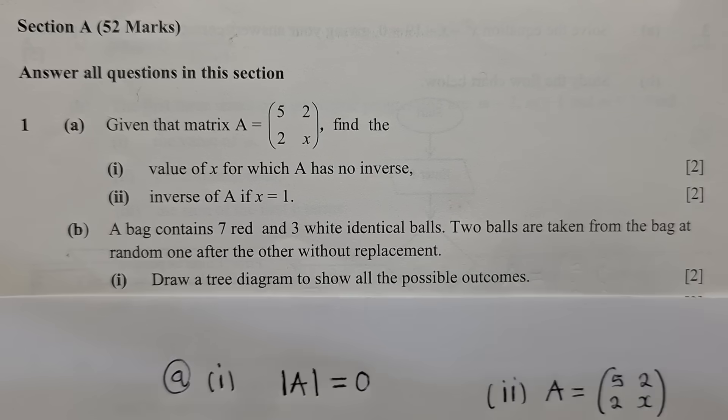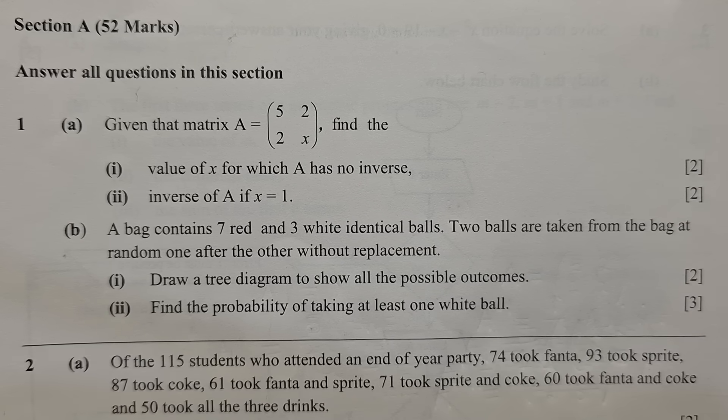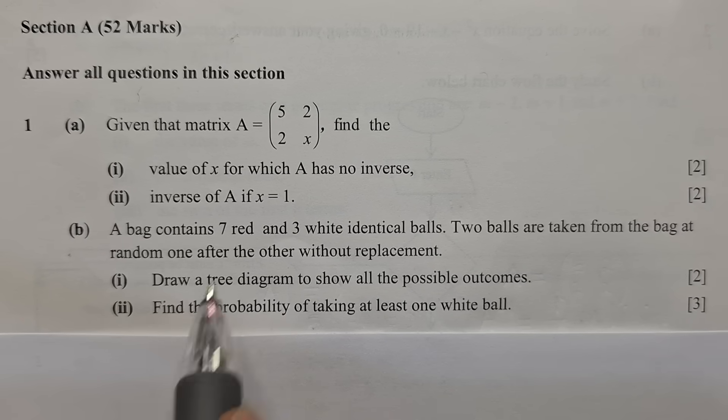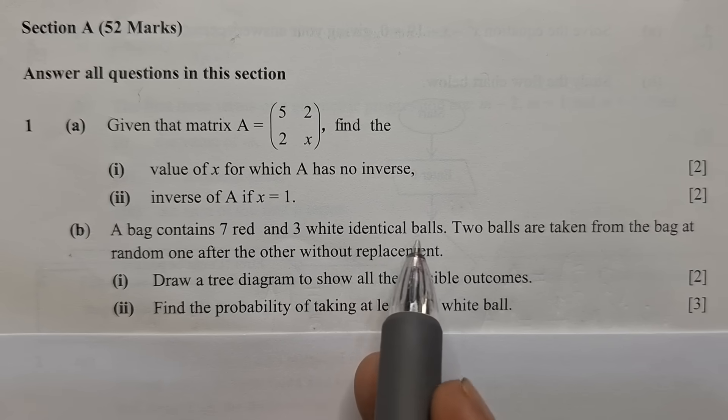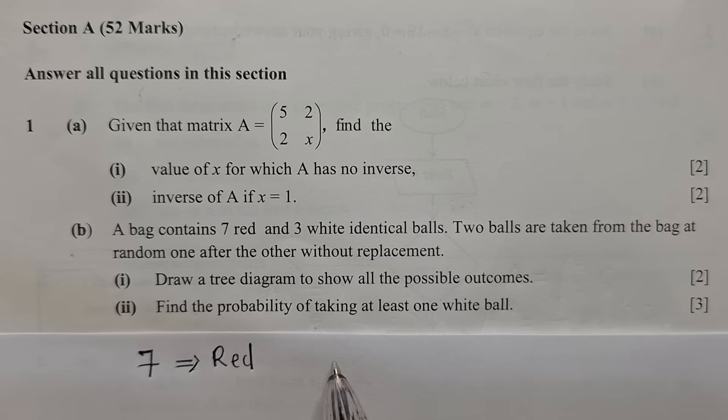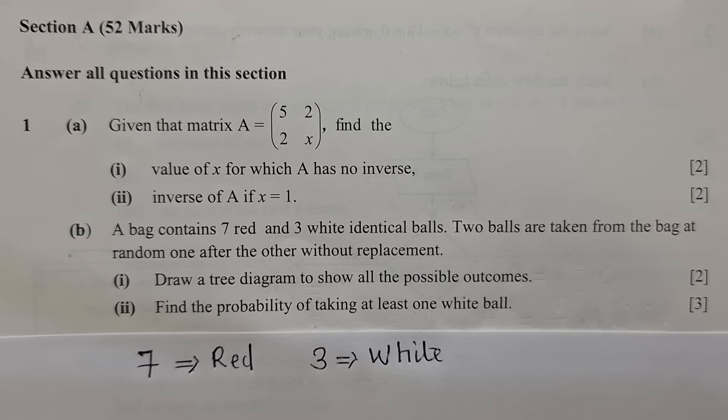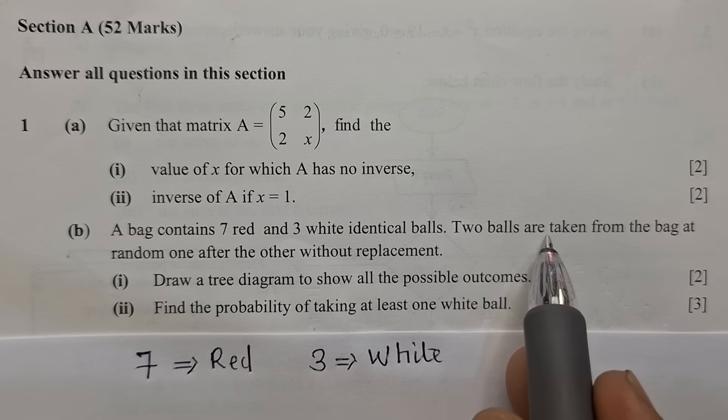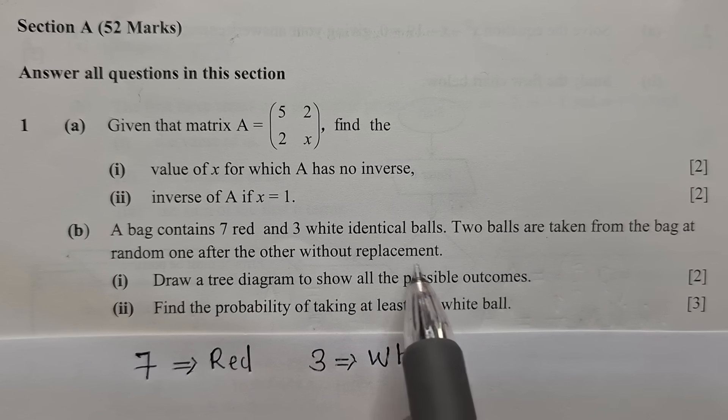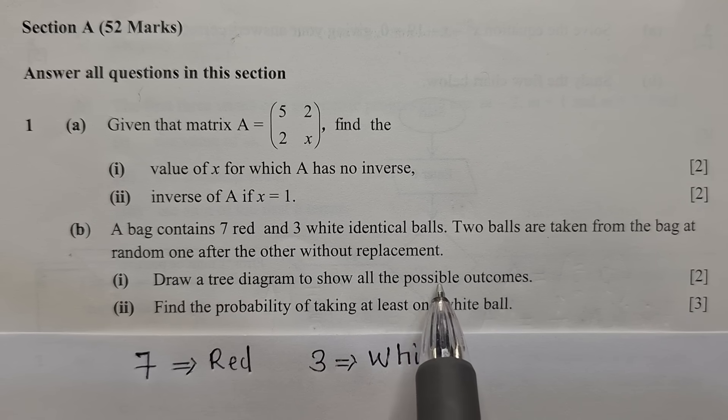So we now look at our question B, 1B. For question 1B, they've given us a statement which we need to follow. They're saying a bag contains 7 red and 3 white identical balls. Two balls are taken from the bag at random, one after the other without replacement.